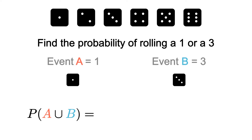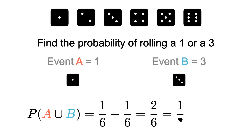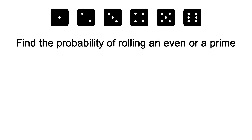When it comes to calculating the probability of rolling a one or a three: the probability of event A is one out of six, since there's one item and six total outcomes. The probability of B is also one out of six. So one-sixth plus one-sixth gives us two-sixths, which reduces to one-third. One-third as a percentage is about 33%, so there's a 33% chance of rolling a one or a three.